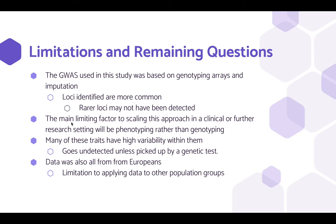Here are some limitations and remaining questions from this study. The GWAS used in this study was based on genotyping arrays and imputation. Loci identified are more common variants, and rarer loci may not have been detected. The main limiting factor to scaling this approach in a clinical or further research setting will be phenotyping rather than genotyping, because many of these traits have high variability and go undetected unless picked up by a genetic test. Data was also all from Europeans, so there will be limitations to applying data to other population groups.